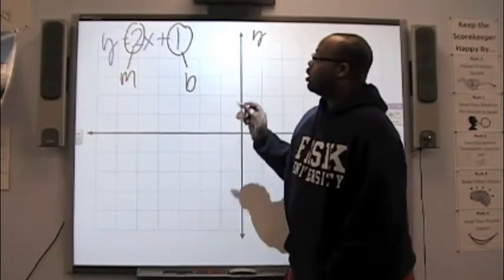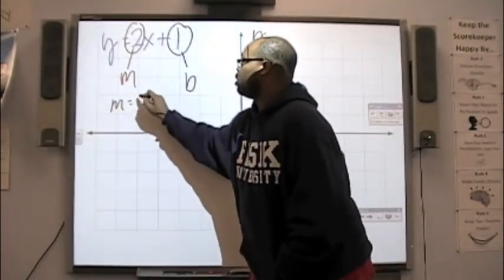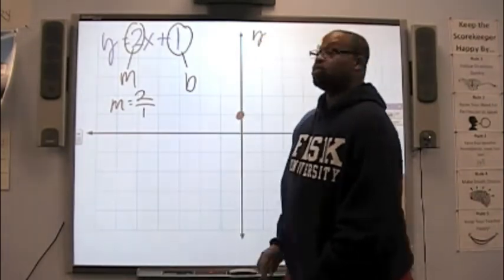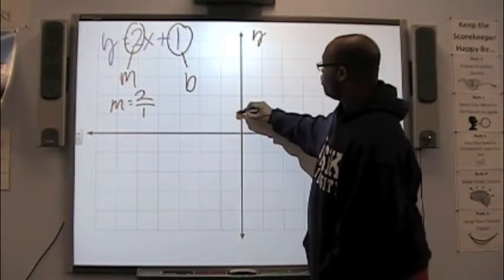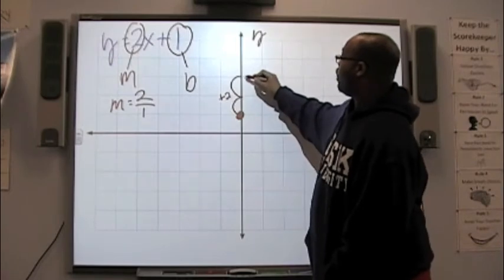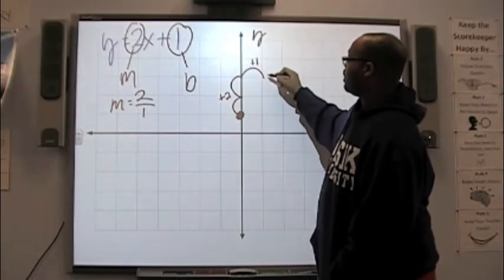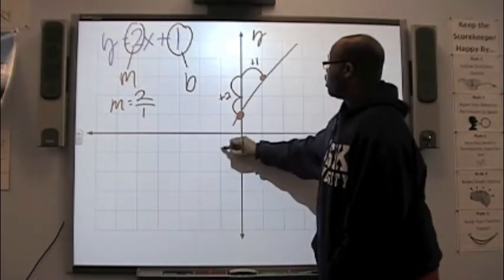And then I'm looking at the slope. Now, 2 can be rewritten as 2 over 1, two positive numbers. So, up two spaces, that's my positive 2, and over to the right, 1, that's my positive 1. Plot a point, graph your line.